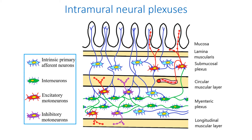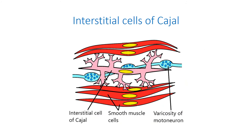Now it is clear that enteric neurons can be grouped as intrinsic primary afferent neurons, interneurons, and motor neurons — excitatory and inhibitory.